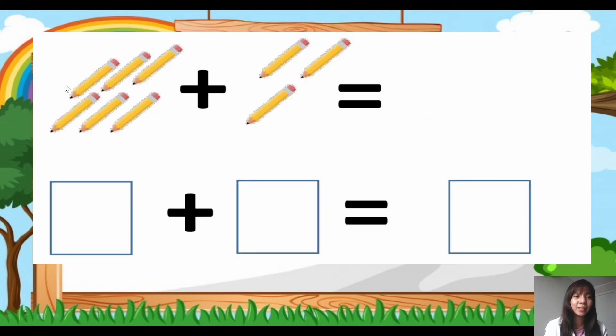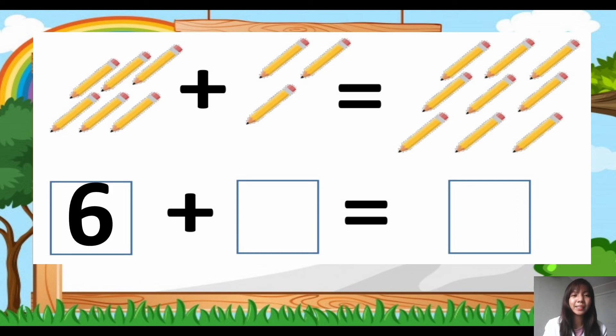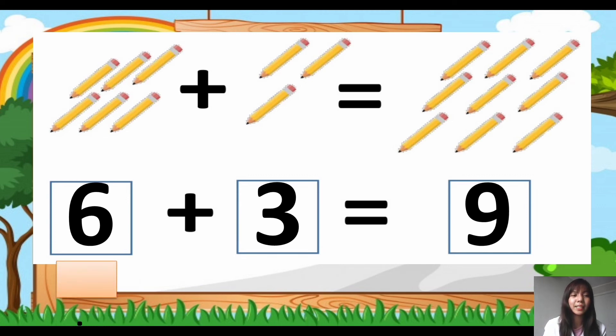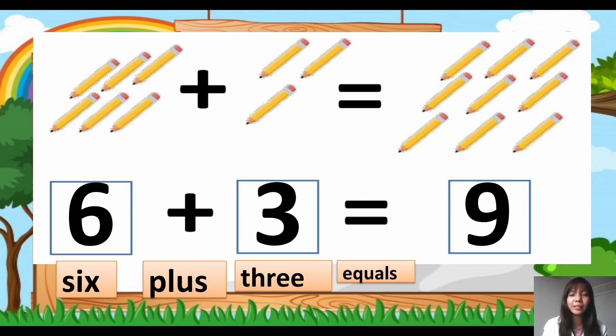Another example. How many pencils are there in this area? We have 1, 2, 3, 4, 5, 6. We have 6 pencils plus 3. So how many pencils are there in all? There are 9 pencils. So 6 + 3 = 9. In words, we have 6, spelled as S-I-X, plus 3, T-H-R-E-E, equals 9, N-I-N-E.